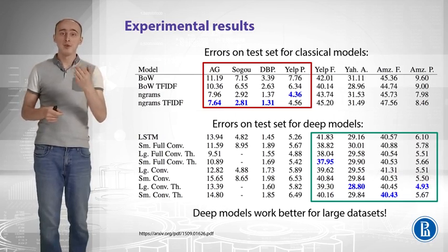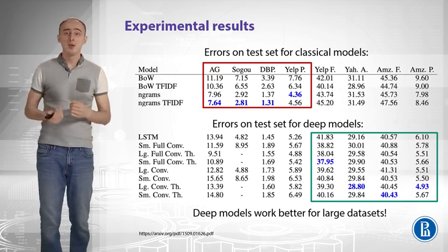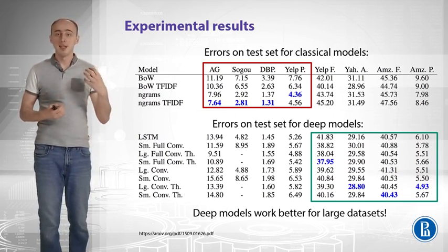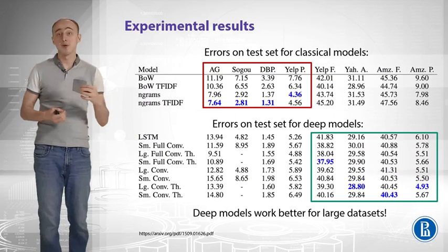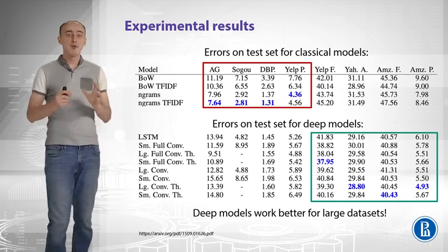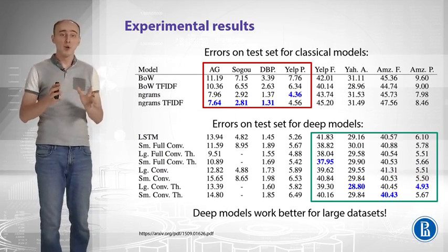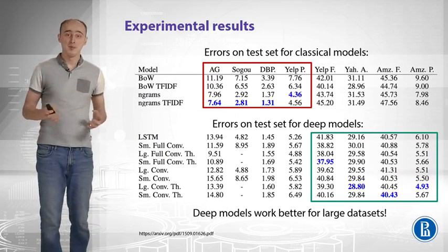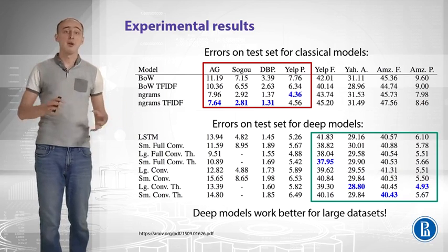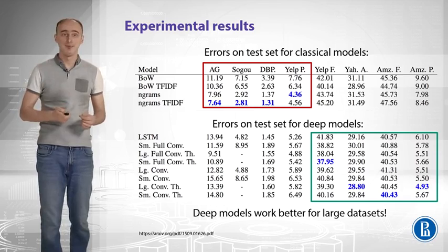Let's say for Amazon reviews, which is the last column, you've got a decrease in error from roughly 8% to like 5%. So, this is pretty cool. What we learned from this is that deep models work better for large datasets. And it makes sense to make all that huge architectures when you have huge datasets.